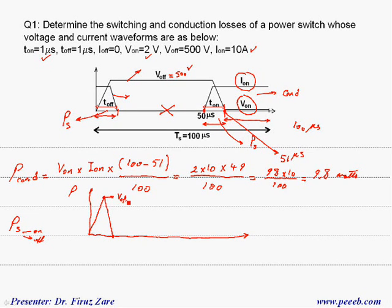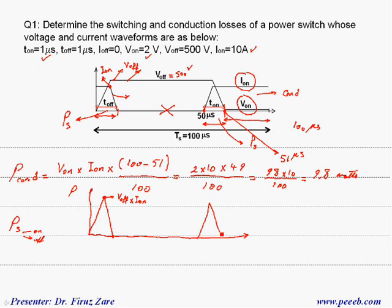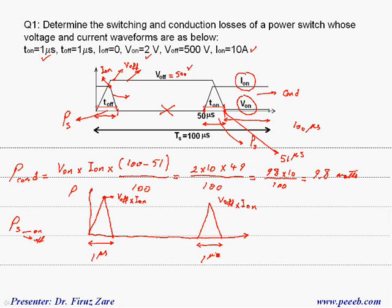The peak of the power waveform is V_off times I_on. This voltage is V_off, so the peak of this waveform is V_off times I_on, which is the same for the turn-on transient. This switching time is 1 microsecond, same as the turn-on time of 1 microsecond. So the peak value is 500 times 10, which equals 5000 watts.